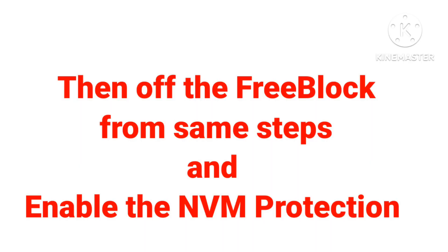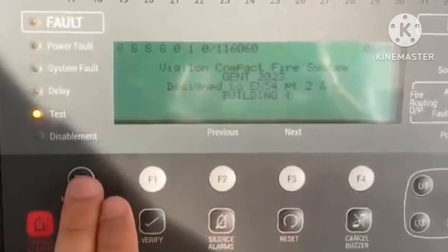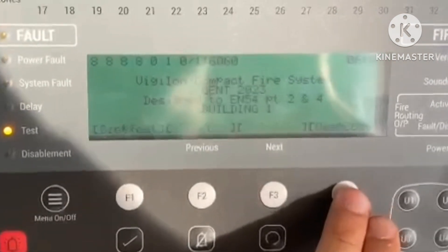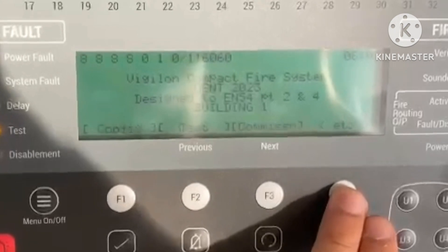After this recovery, you will check your labels by going to Info. After that, turn off the Free Block using the same steps and enable the NVM Production. In this way we can easily find or recover our lost labels.